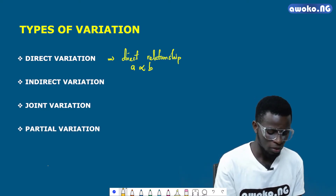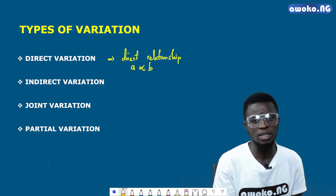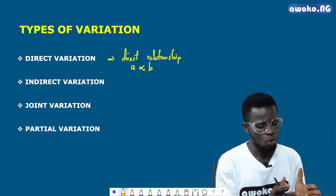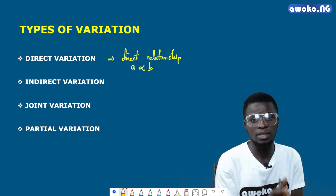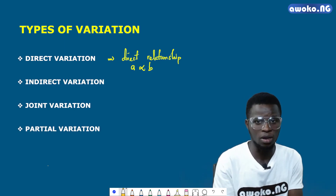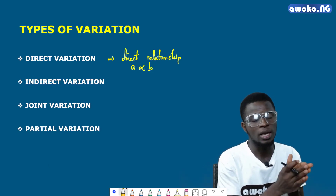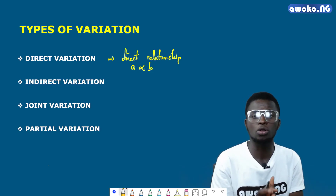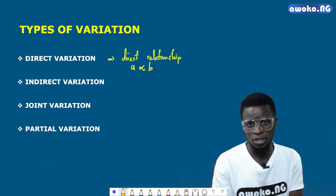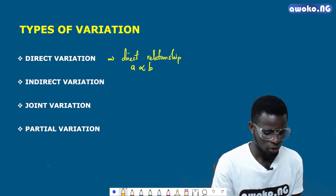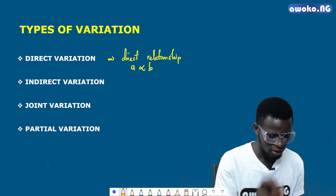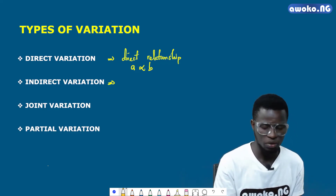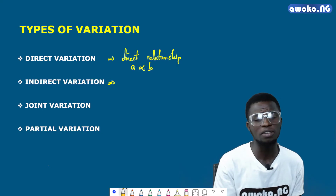The implication of direct variation is that as quantity A increases, quantity B also increases, and vice versa — that is, if quantity A decreases, quantity B would also decrease.